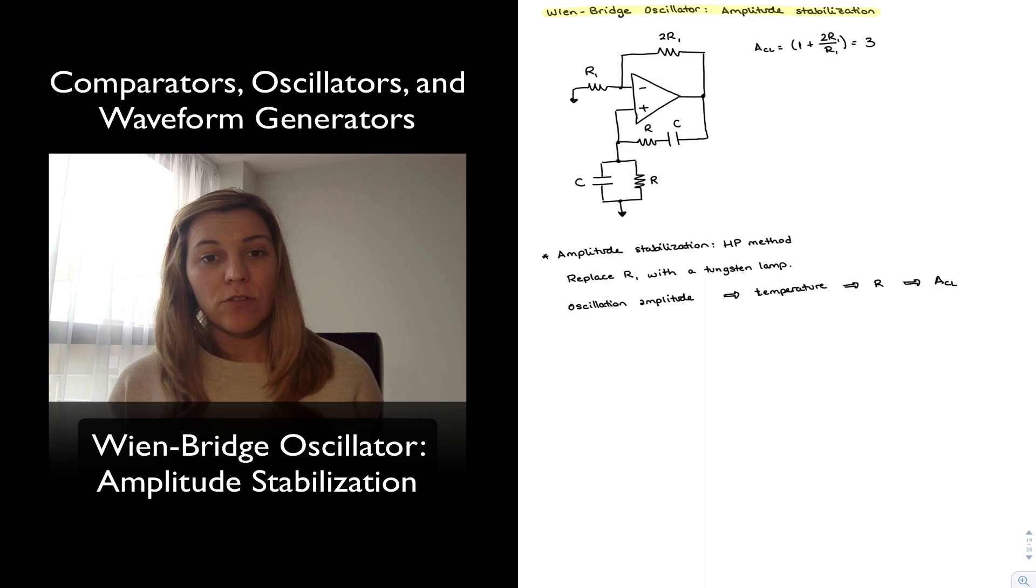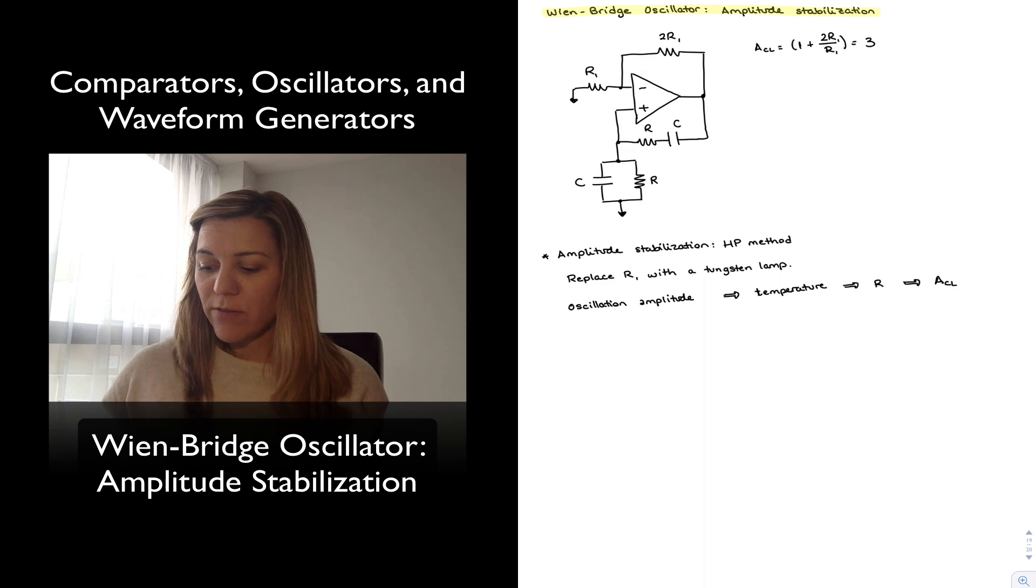As we mentioned, the Wien-Bridge oscillator consists of an amplifier, non-inverting amplifier with a gain of 3, and a lead lag network. And so I have drawn here the standard Wien-Bridge oscillator, and we said the Barkhausen criterion is met as long as the gain of the non-inverting amplifier is equal to 3.